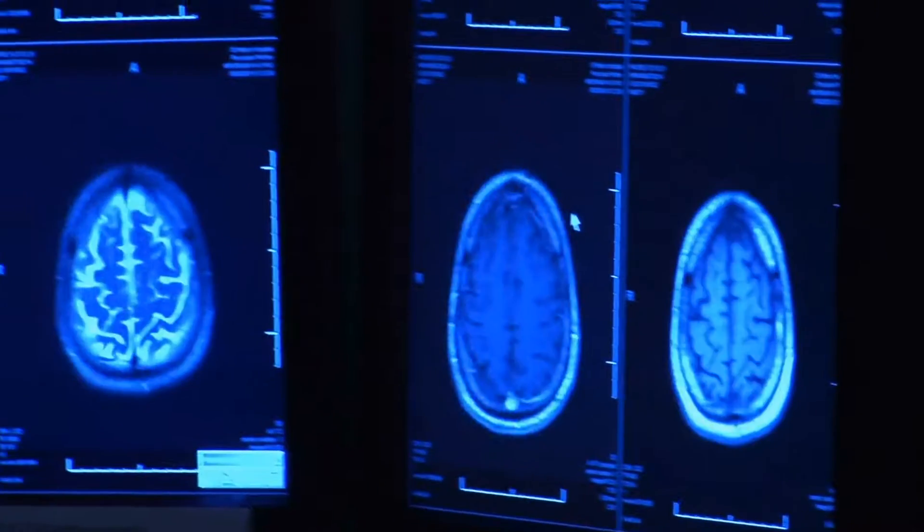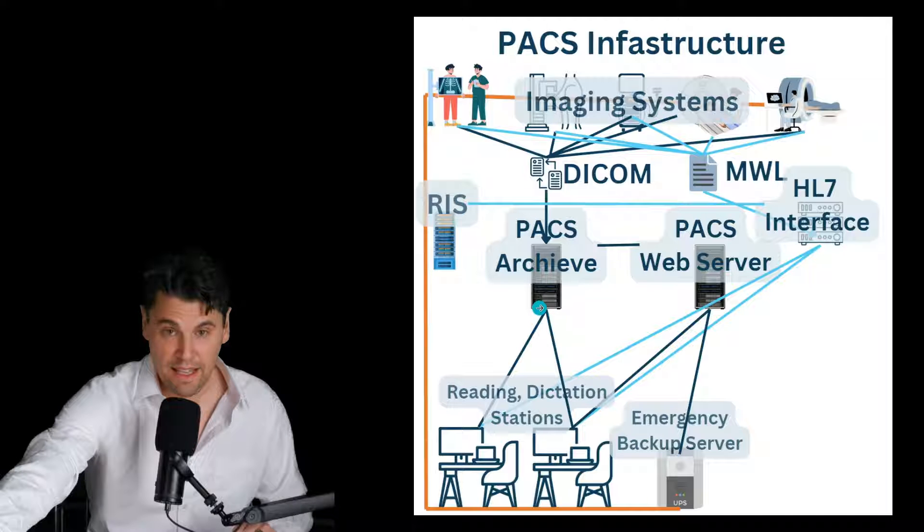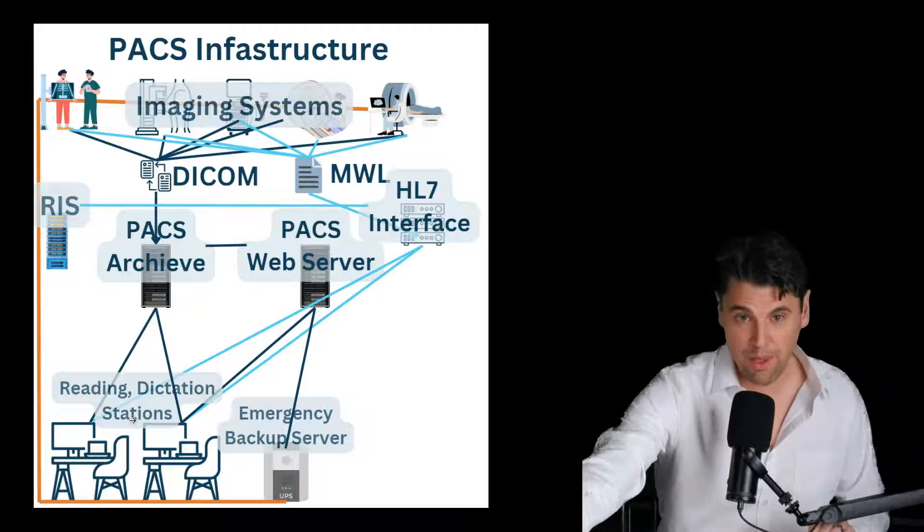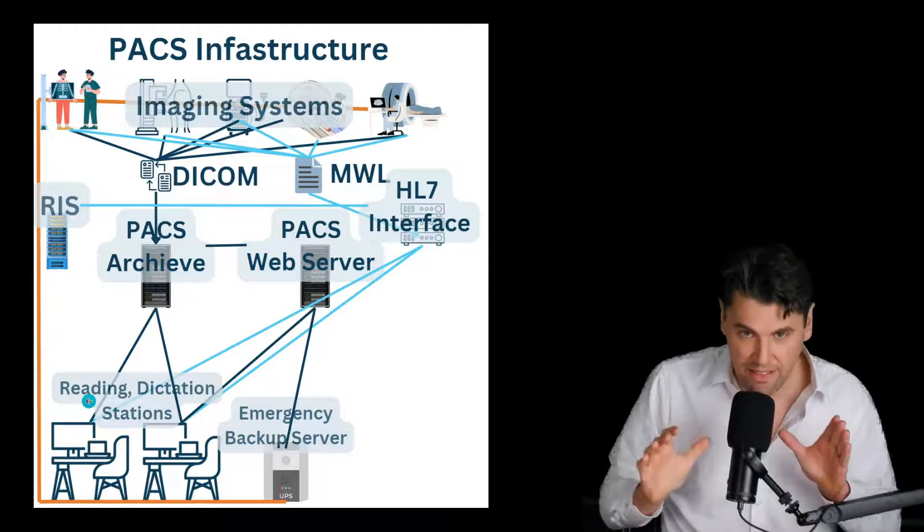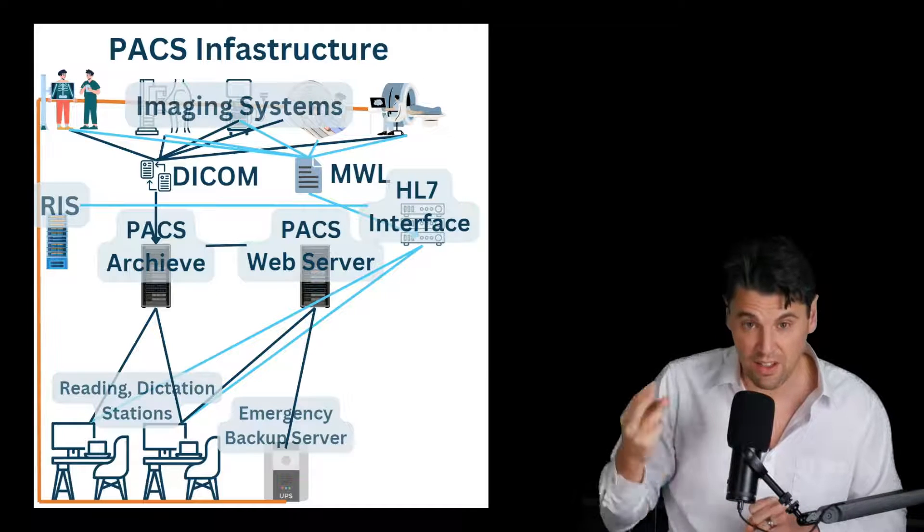Finally, we're going to introduce the radiologists that are going to be reading the images. So the radiologists are going to be getting the images from PACS. This could either be coming from this PACS archive or coming from the PACS web server. These reading stations also are going to be hooked up to the HL7 interface. And at the reading stations, the radiologist does the reading, the dictation, and the reporting.